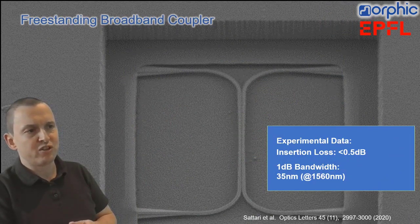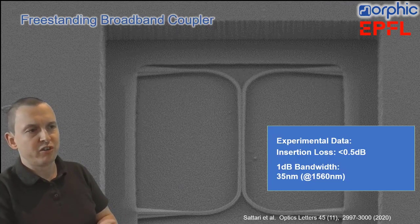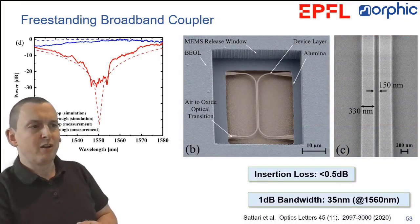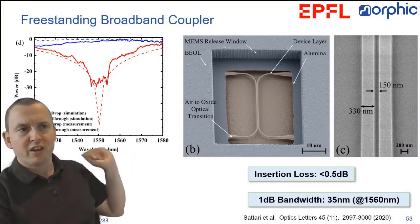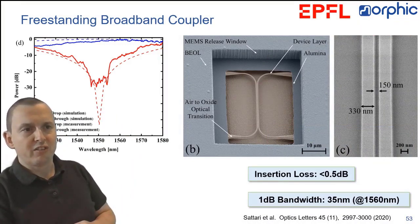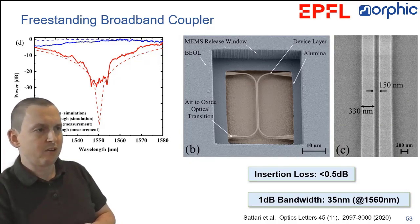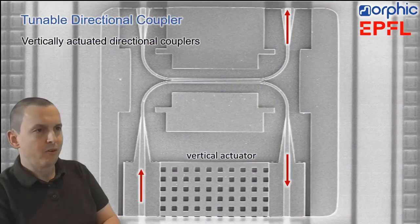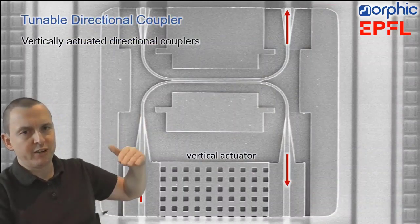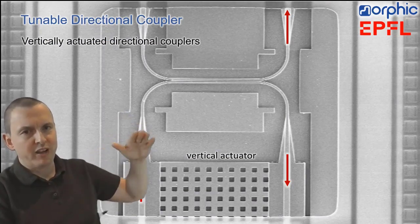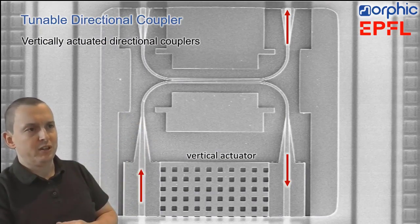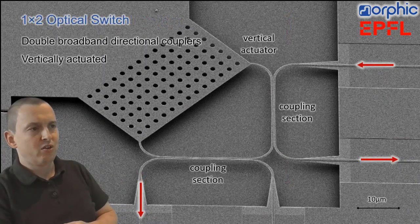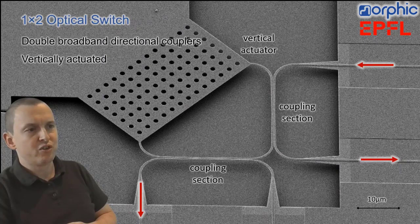We can also use the same technique to do coupling. So, you can essentially do a directional coupler design with freestanding, and you can engineer it to be broadband. So, in this example here, in on and off state you get quite a good suppression, and over a wide bandwidth. And you can also actuate it. So, you can either do it with a vertical actuator, pull the coupler down, or you can move it in plane to change the coupling distance. You can cascade these couplers, for instance, to get a higher extinction ratio. But, of course, this is only useful for certain functions. So, for instance, in this case, it would be a 1 by 2 optical switch.